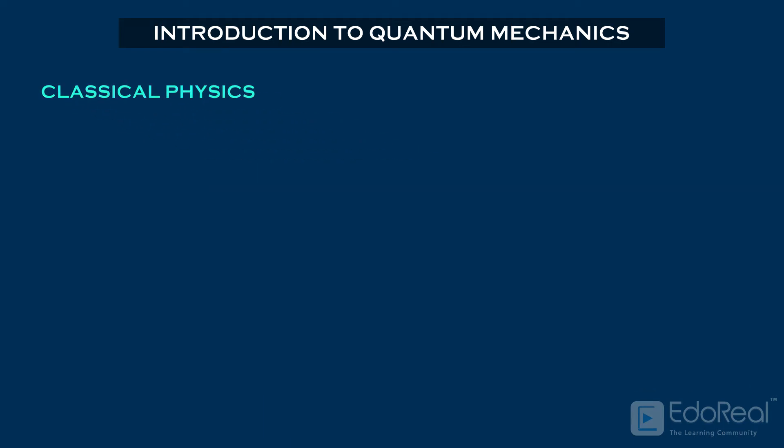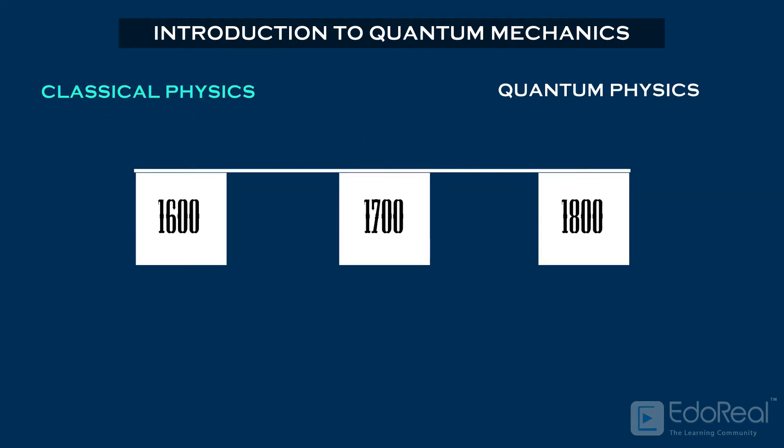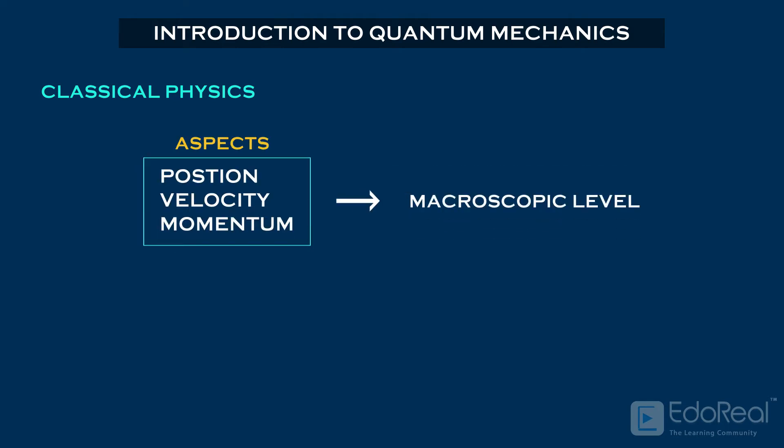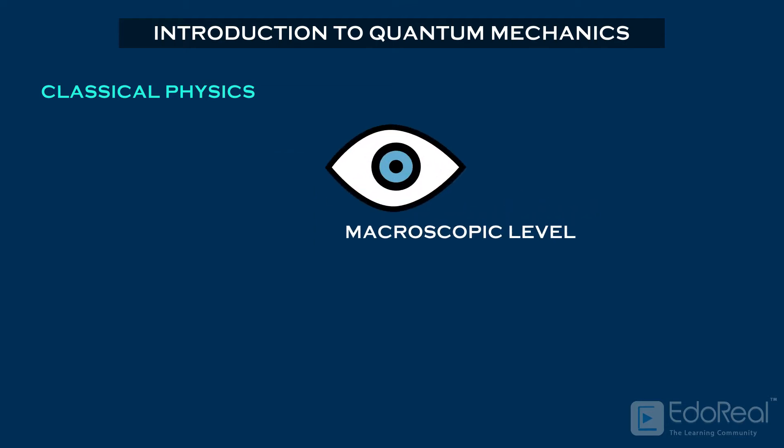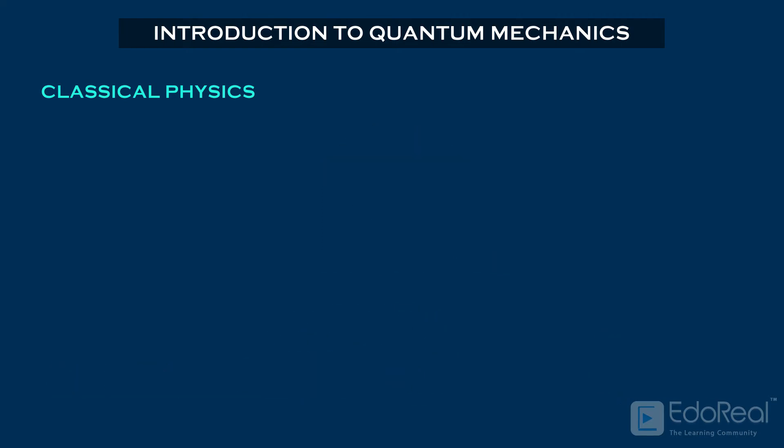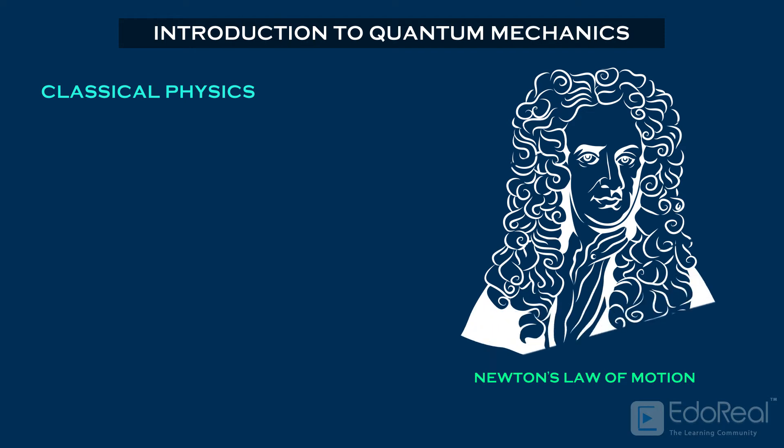Classical physics is the physics that existed long before quantum physics. It describes many aspects of nature at an ordinary or macroscopic level. Macroscopic means the objects which are visible to the naked eye. Classical physics is based on Newton's laws of motion. In classical physics, everything is deterministic.